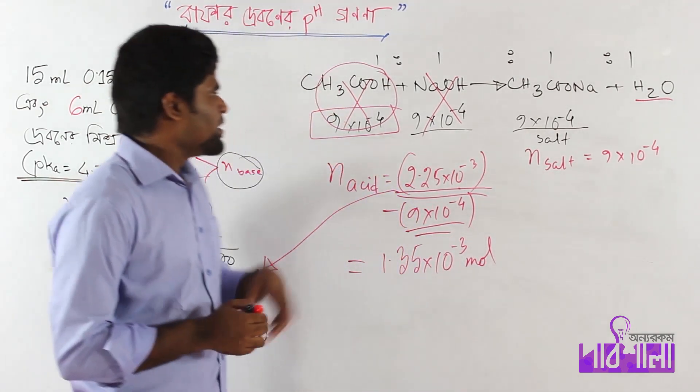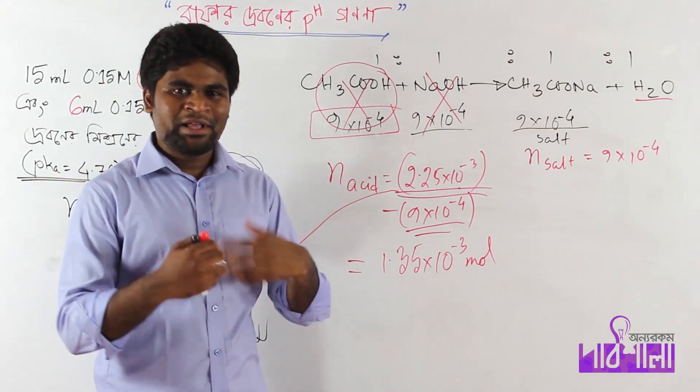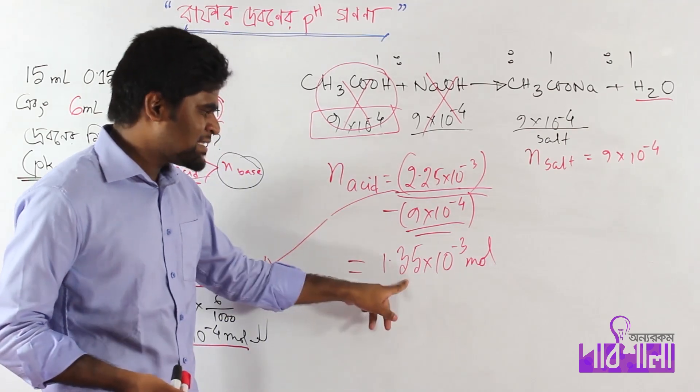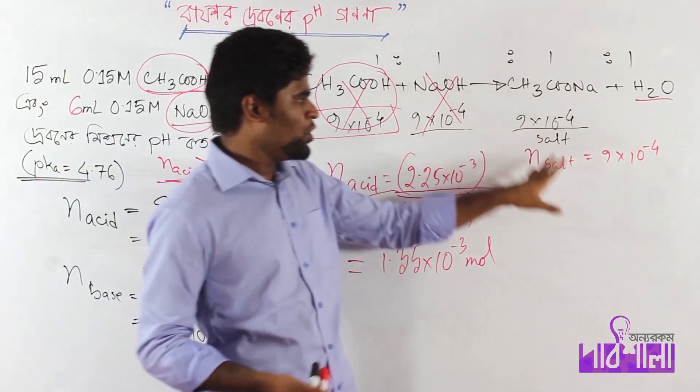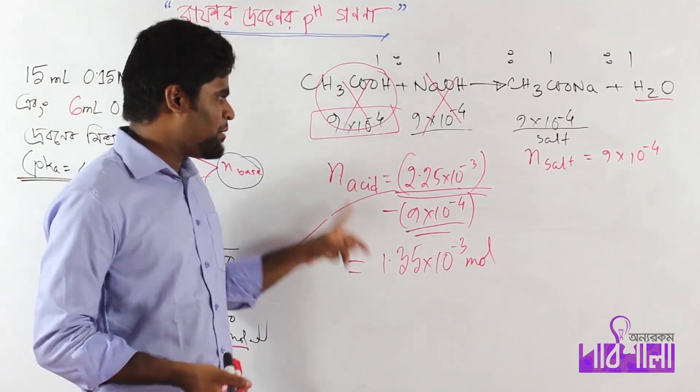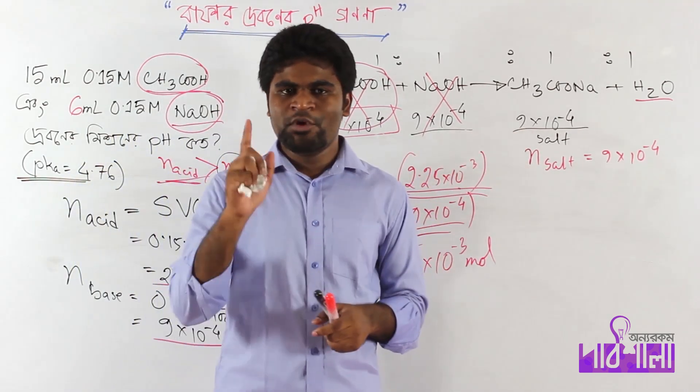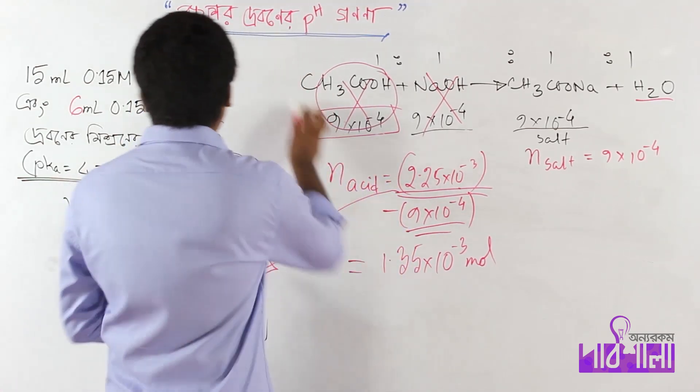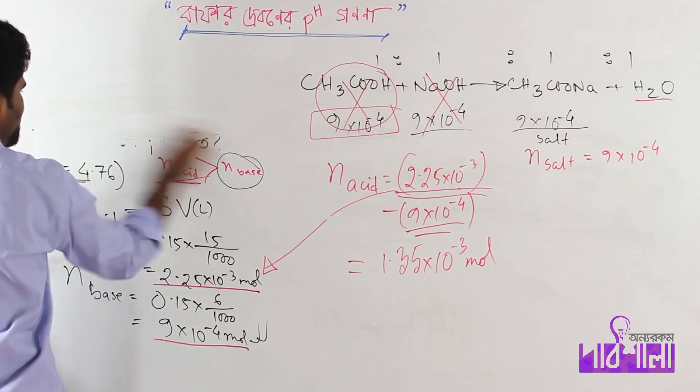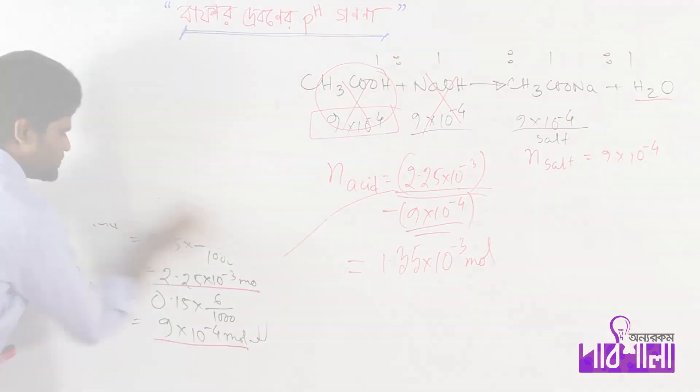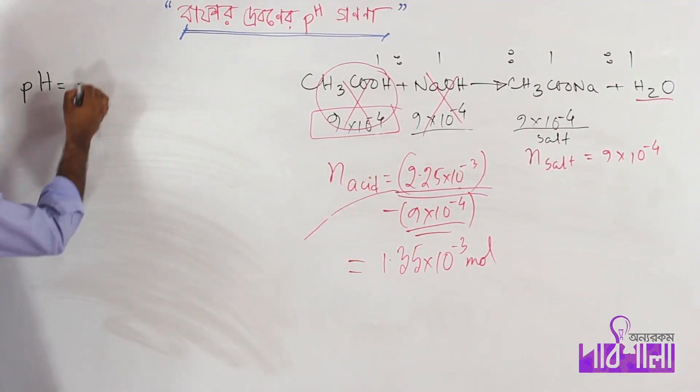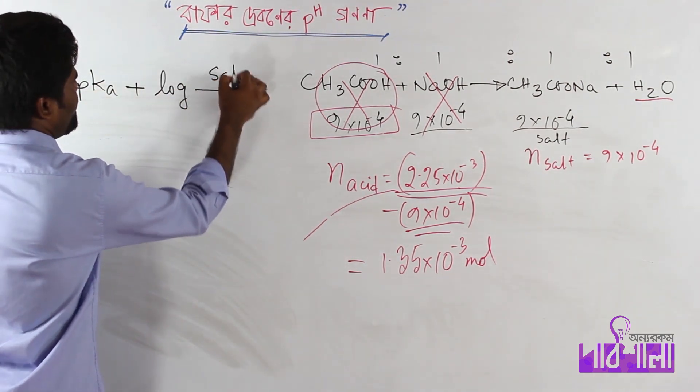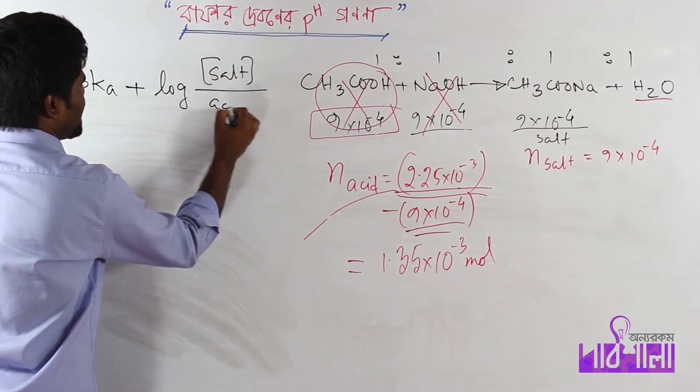The remaining weak acid and the produced salt together form a buffer solution. This is very important - a buffer solution is formed. We can use the Henderson-Hasselbalch equation.